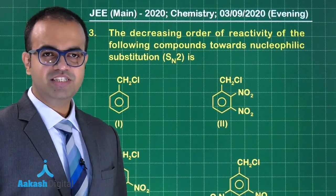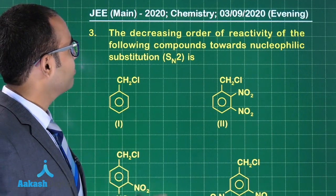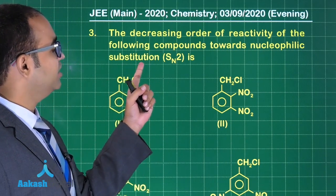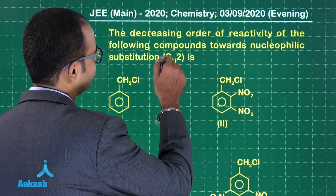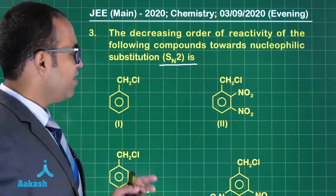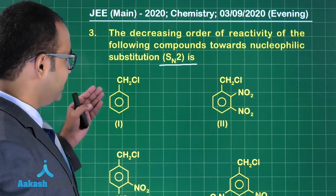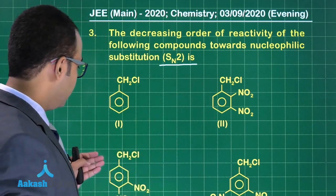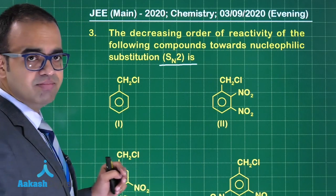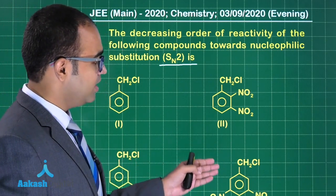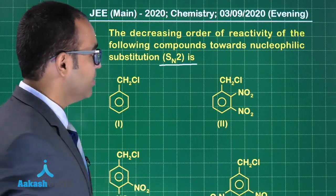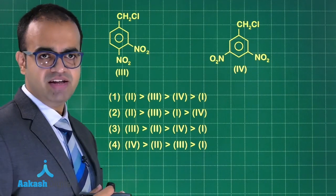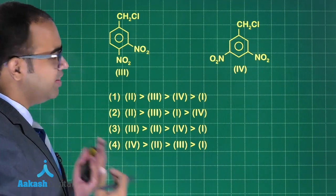Question 3 asks for the decreasing order of reactivity of the following compounds towards nucleophilic substitution SN2. Keep in mind they are asking about SN2. The compounds are: first, benzyl chloride; second, ortho and para NO2-substituted benzyl chloride; third, meta and para NO2-substituted benzyl chloride; fourth, meta di-substituted NO2 benzyl chloride.